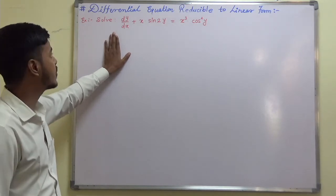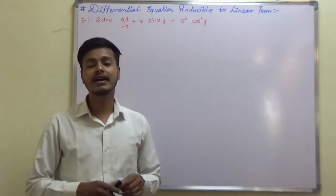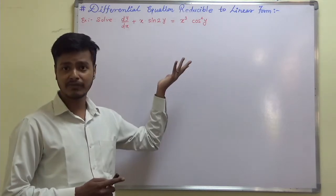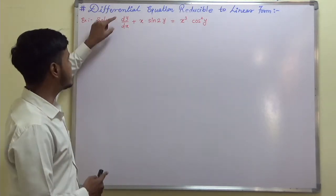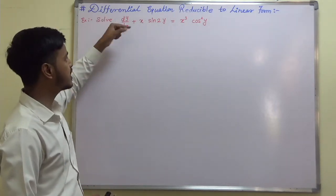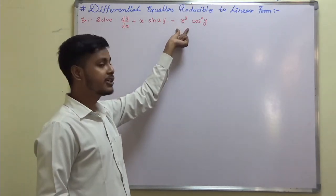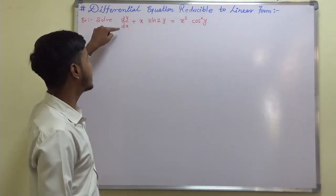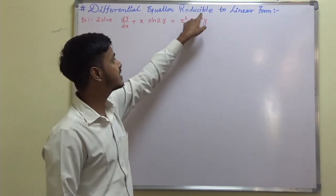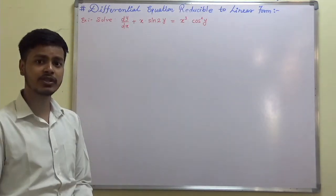This problem says: solve dy/dx equal to this. Many students ask how to determine by which term to divide. Since we have dy/dx, according to the linear form it should be dy/dx plus p(x)·y equals q(x), meaning we need a function of x only. The extra term we have is cos²y, so just divide by cos²y.